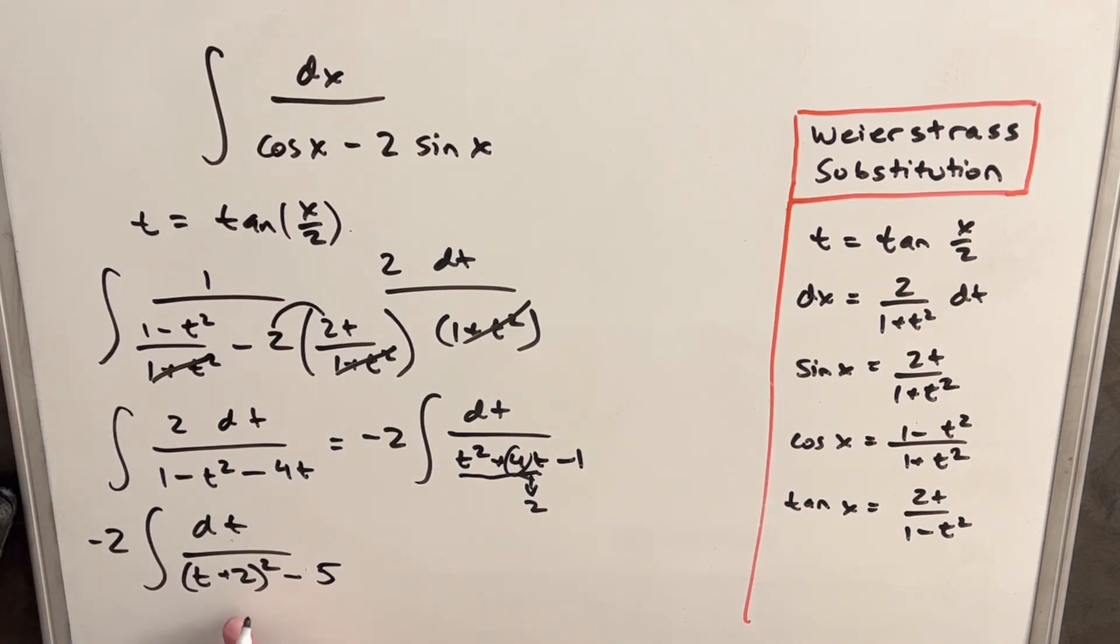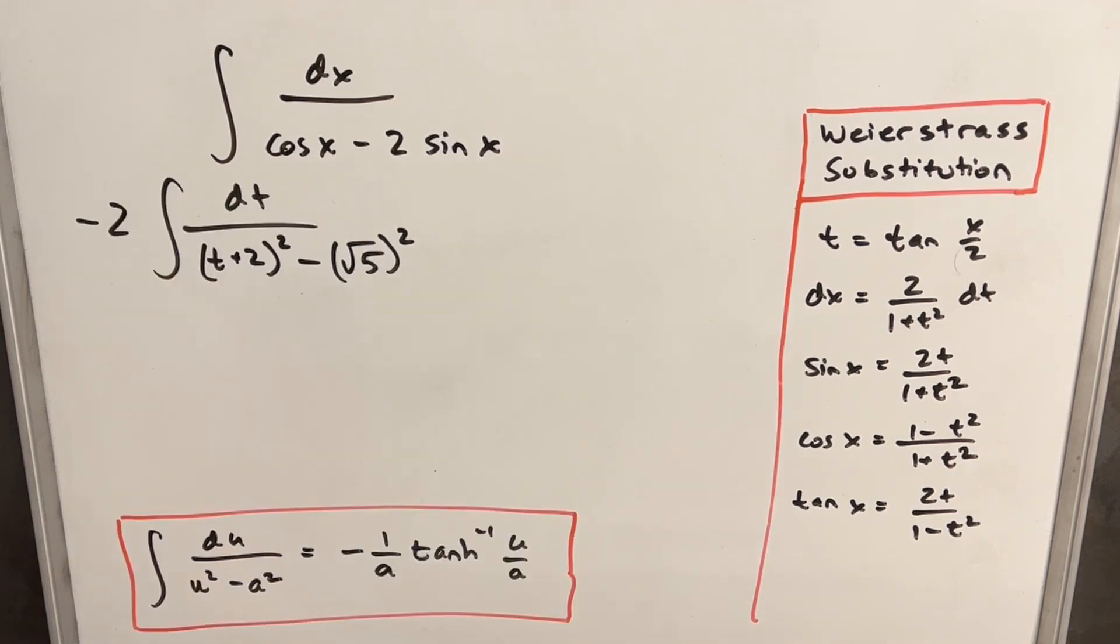But what I really want when we do the integration is for this to be a squared term. So we'll write it as minus square root of 5 squared. Now we have this in a form that we can integrate. We'll use this formula down here at the bottom, which tells us when we have du over u squared minus a squared, we can put this in the form of hyperbolic inverse tangent.